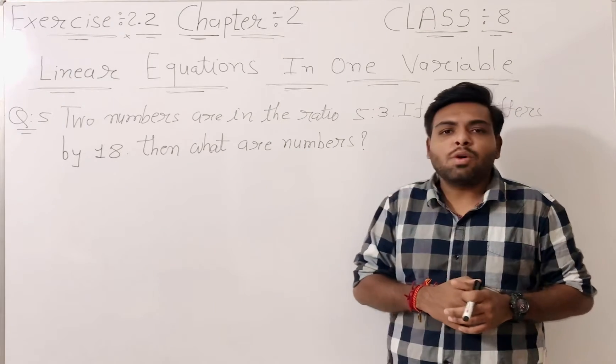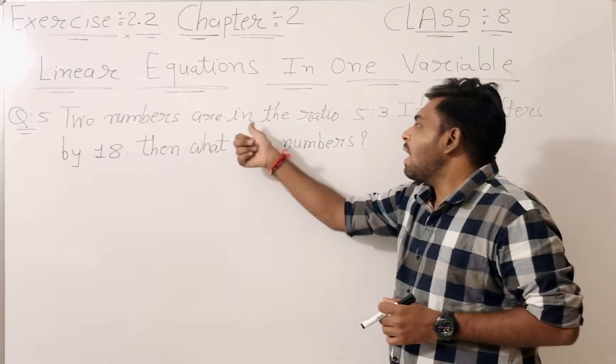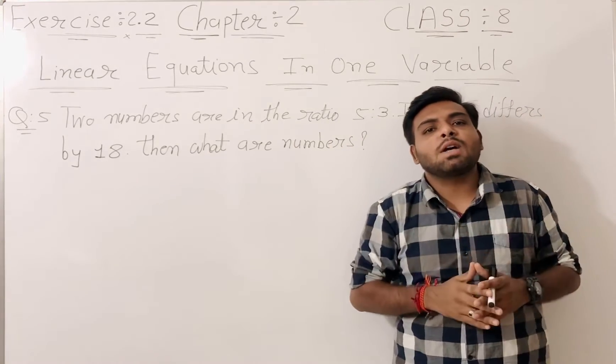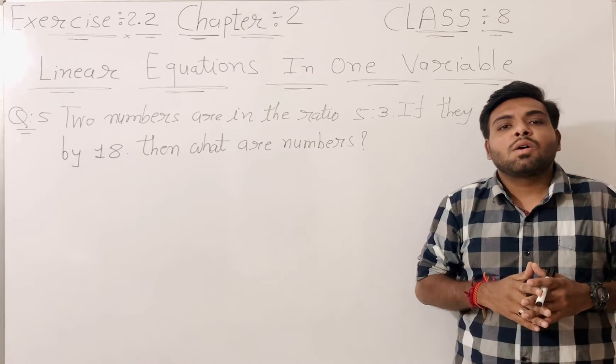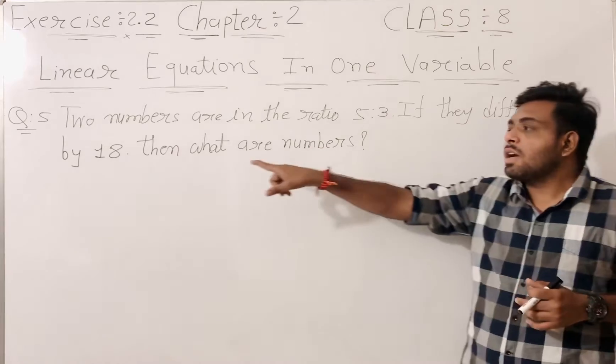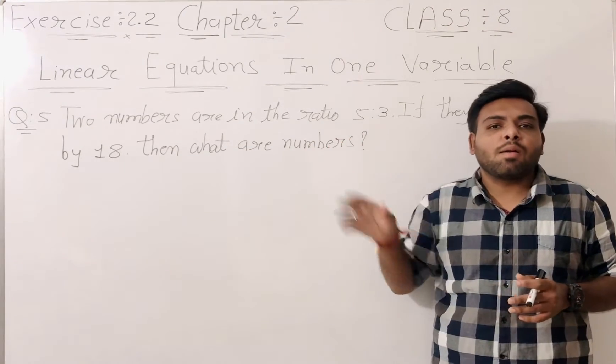So here is question number 5. Two numbers are in the ratio 5 to 3. If they differ by 18, then what are the numbers?